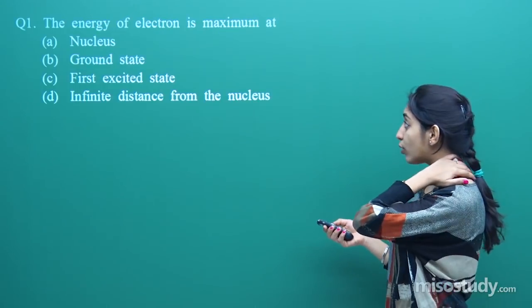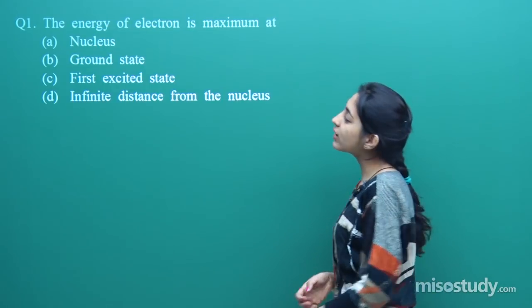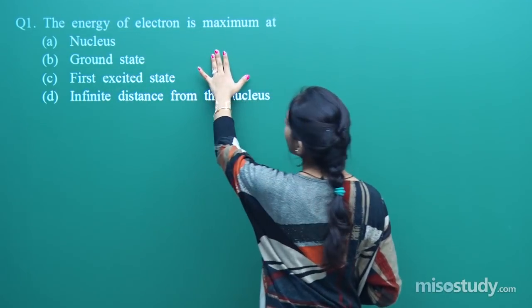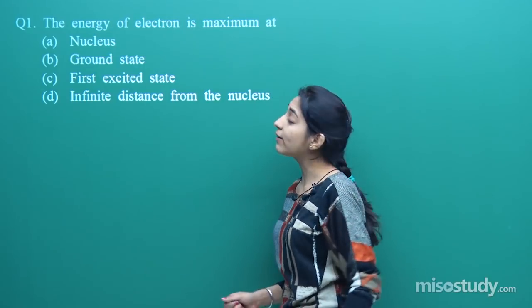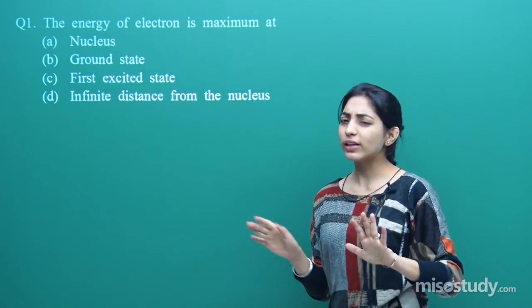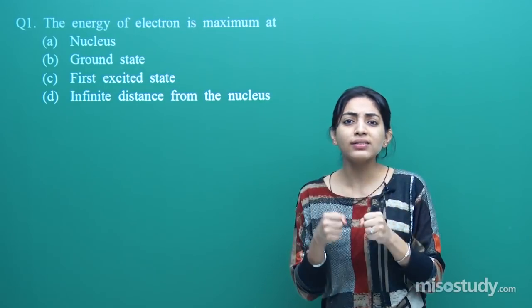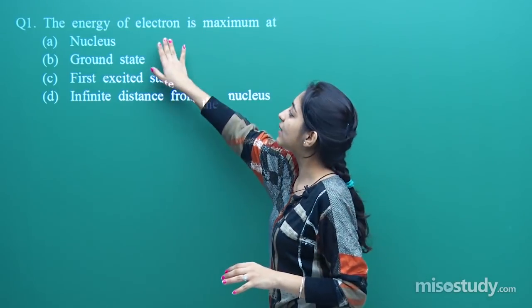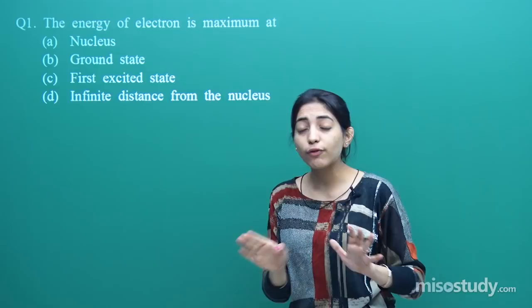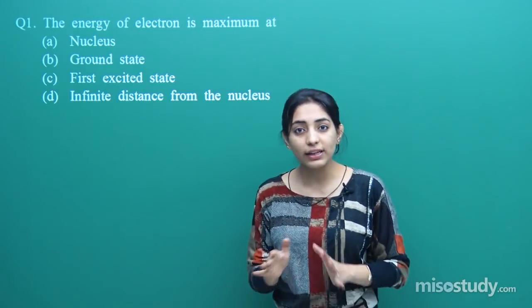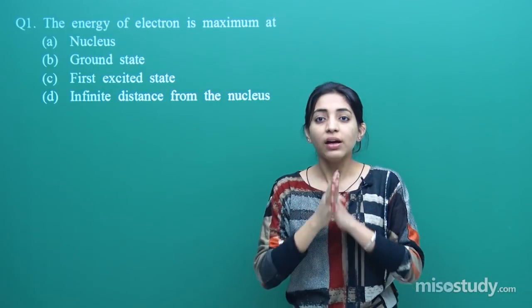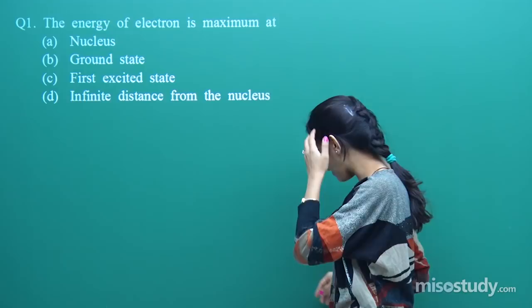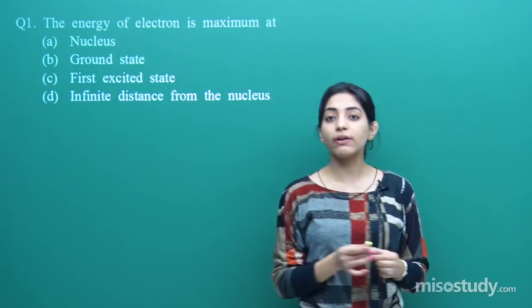Let's start with the very first question. The question is: the energy of an electron is found to be maximum at — whether at the nucleus, at the ground state, at the first excited state, or at the infinite distance from the nucleus. Now let us try to go to the crux of the question.